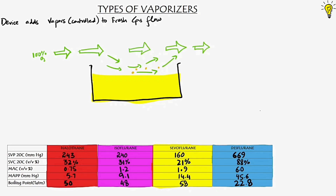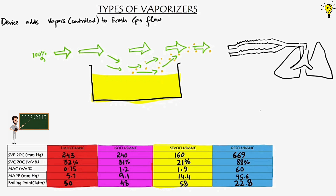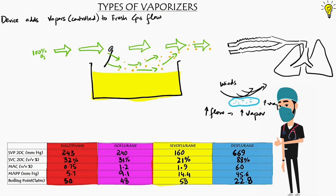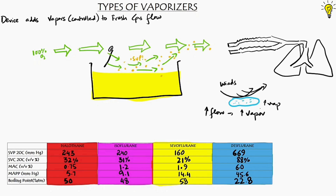In the last episode, we said vapor pressure is an air-liquid surface property. So the more you expose the liquid surface to flow, the more vapor is generated — like after rainfall, the water on the roadside dries up faster in a windy environment. The saturated vapor state is achieved when molecules going out as vapor equal the molecules falling back inside.